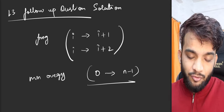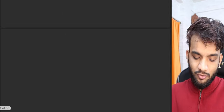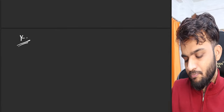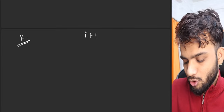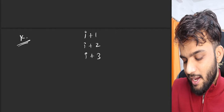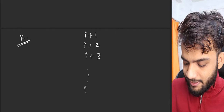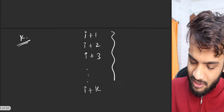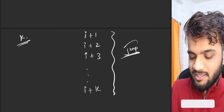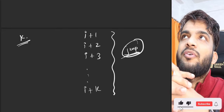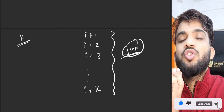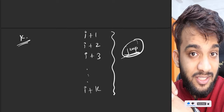In Lecture 3 I gave you a follow-up: what if I give you k? What if you're allowed to jump from i+1 to i+2 to i+3, all the way up to i+k? So instead of allowing only a couple of indexes, I allow you to jump around k indexes.